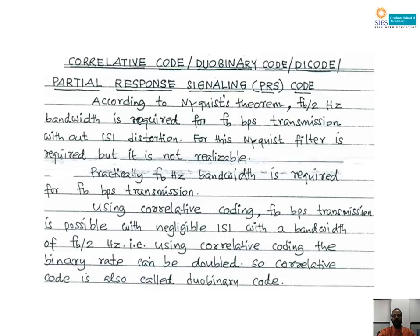According to Nyquist theorem, for transmission of Fb bits per second, Fb/2 Hz bandwidth is needed. That is called Nyquist bandwidth. The meaning is: for transmitting 100 bits per second, 50 Hz bandwidth is needed. But for the realization of this, a Nyquist filter is needed. A Nyquist filter is a rectangular filter — a sharp cutoff filter. It is not realizable. So practically, Fb bits cannot be transmitted with a bandwidth of Fb/2 Hz using the Nyquist filter. According to Nyquist's first criterion, Fb bits can be transmitted per second without any ISI with a bandwidth of Fb/2 Hz.